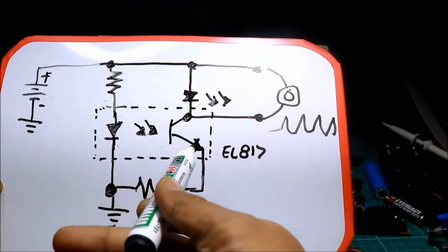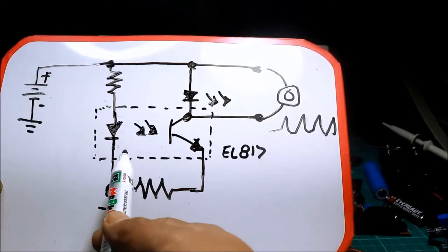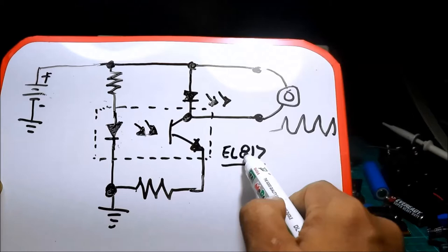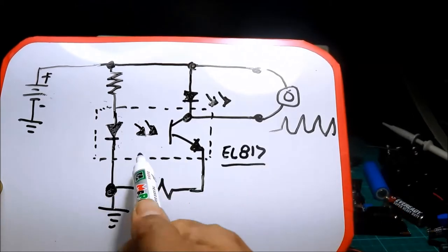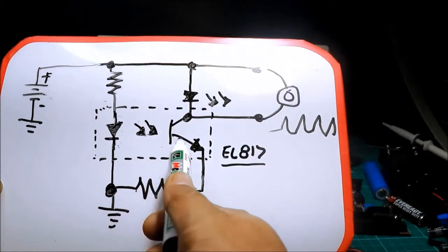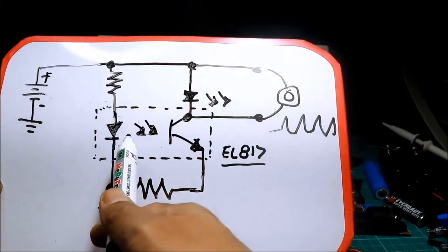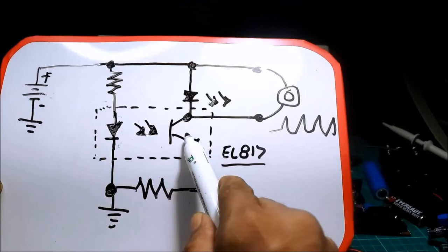Paano ba gumana ang optocoupler? Sa optocoupler, ginamit natin EL817. Ang loob ng optocoupler ay may photodiode at saka may transistor.